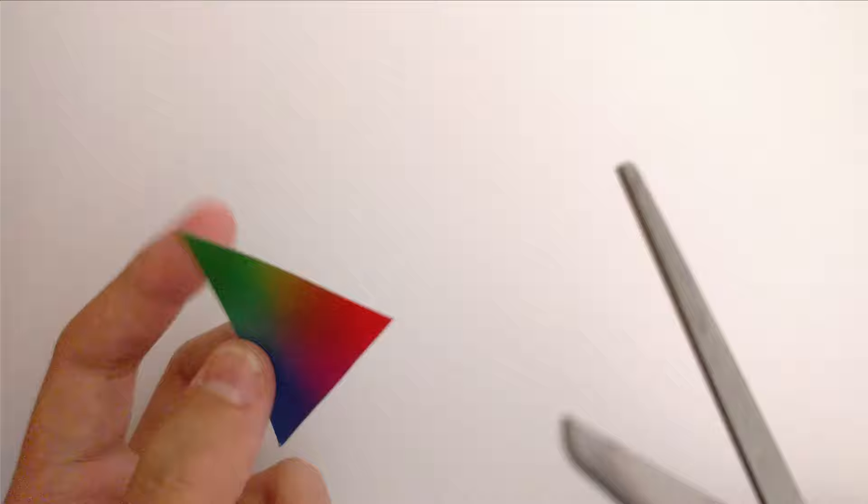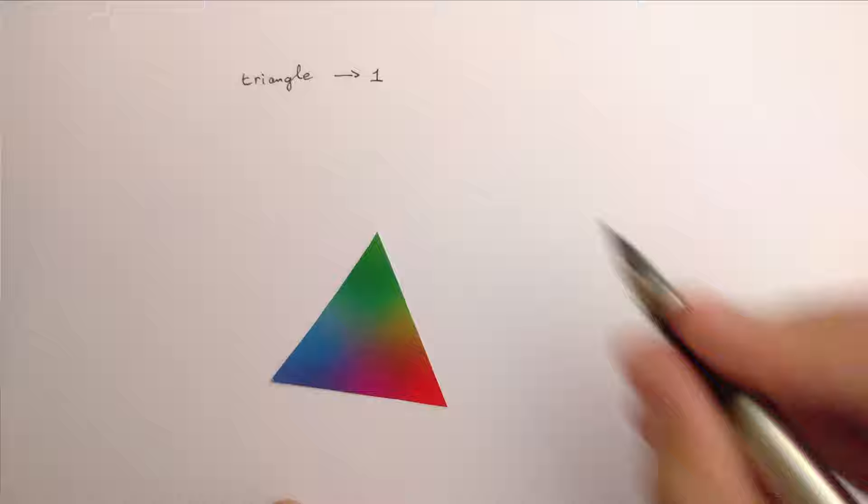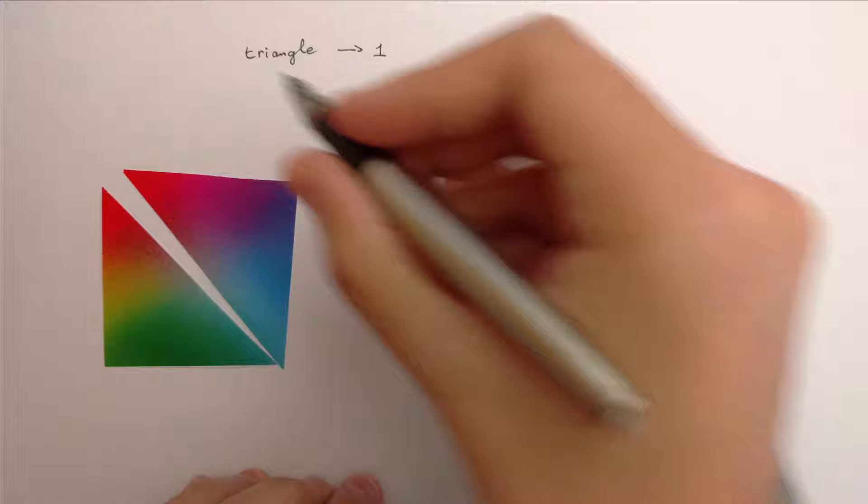A triangle is already cut into triangles. There's only one way of doing nothing to it. A square, as you know, has two diagonals. Cutting along either leaves two triangles. That's two ways of cutting a square.